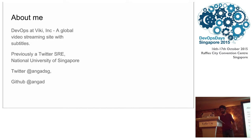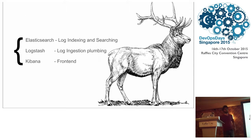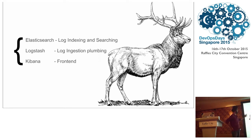Let me introduce myself. Viki is a global video streaming site with crowdsourced subtitles — that's why it's called Viki. Before joining Viki around one year ago, I was a site reliability engineer at Twitter, and I graduated from the National University of Singapore. ELK is that animal, and it's also the Elasticsearch-Logstash-Kibana stack — I'll be going into some details about this.